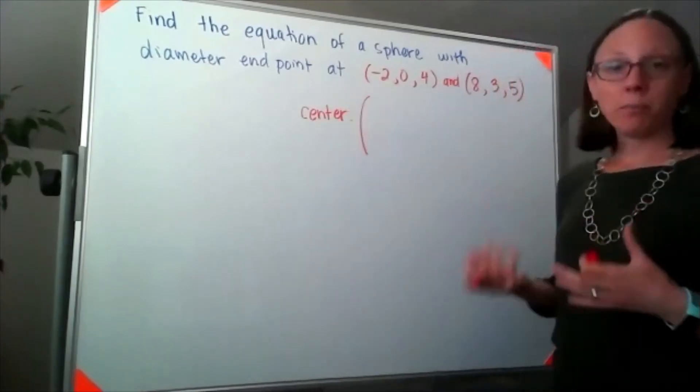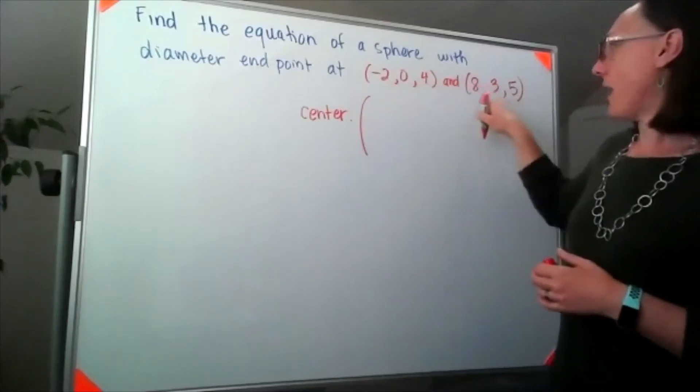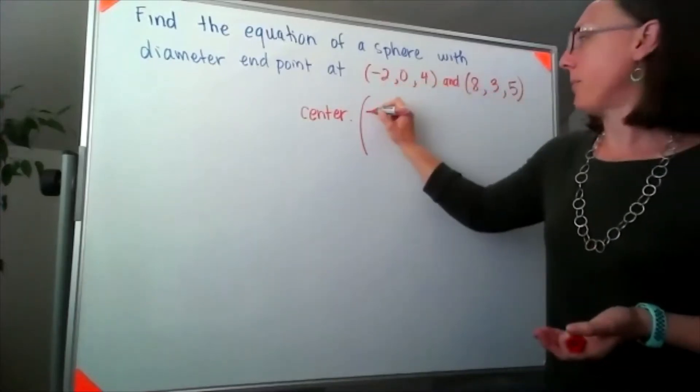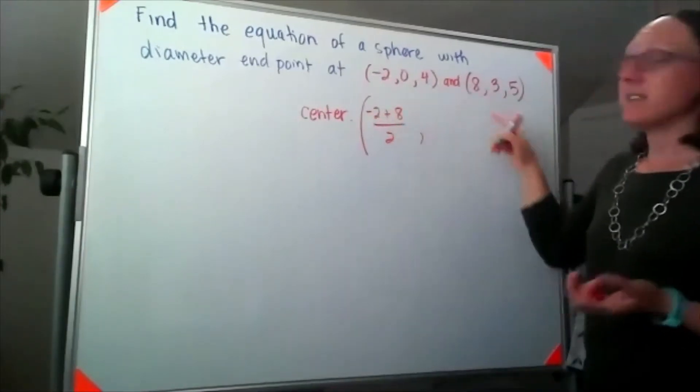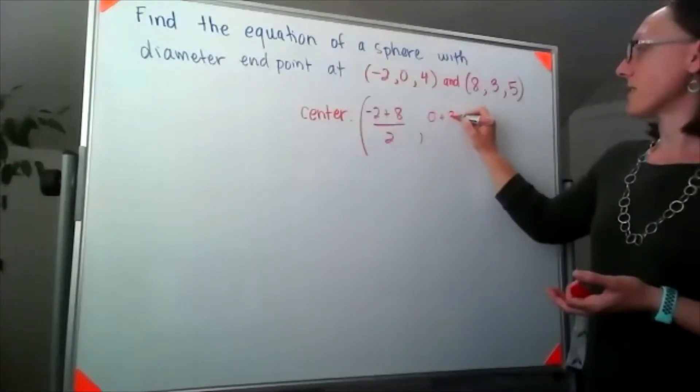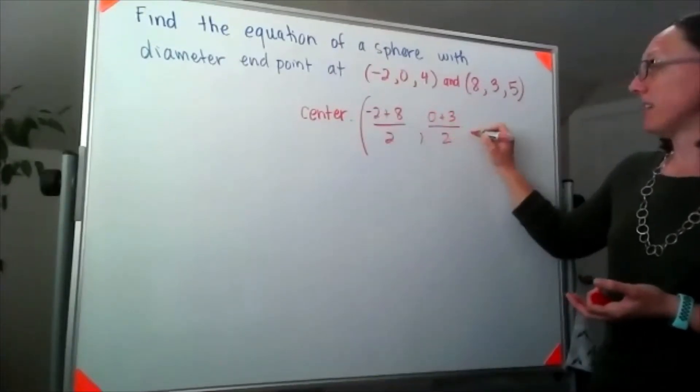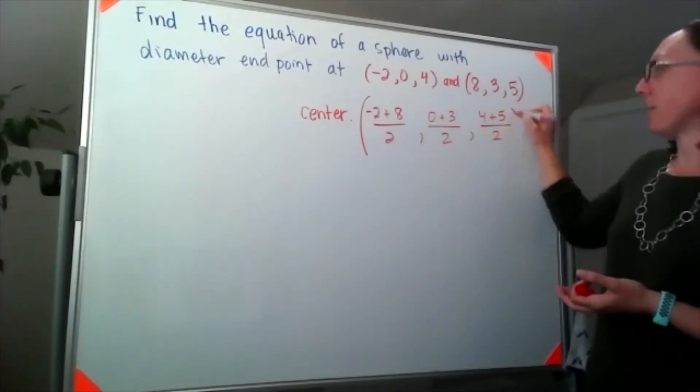We're going to use the same midpoint formula from first quarter calculus. So I'm going to take my two x values, add them up, and divide by 2. Same with my y values, take the two points, 0 plus 3, add them up, divide by 2. Same for my z's, 4 plus 5, and divide that by 2.